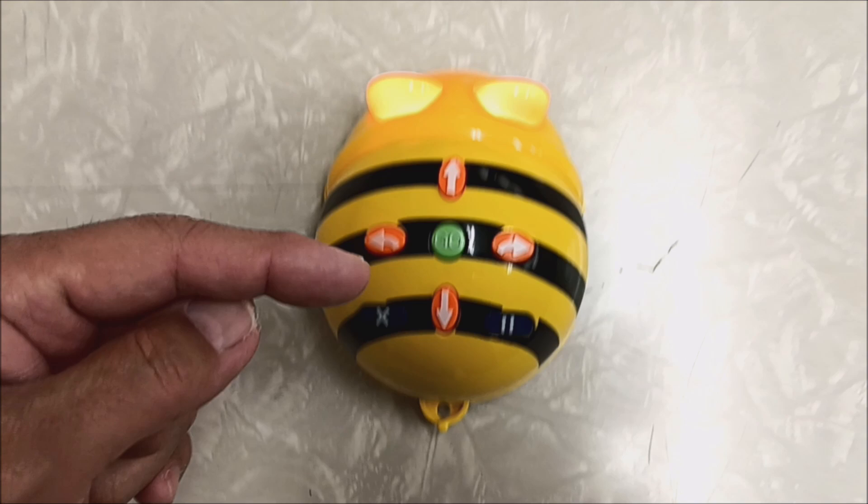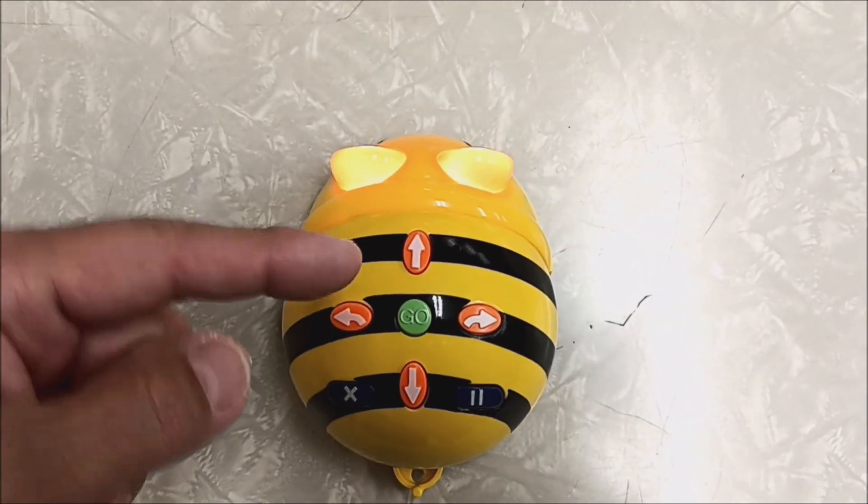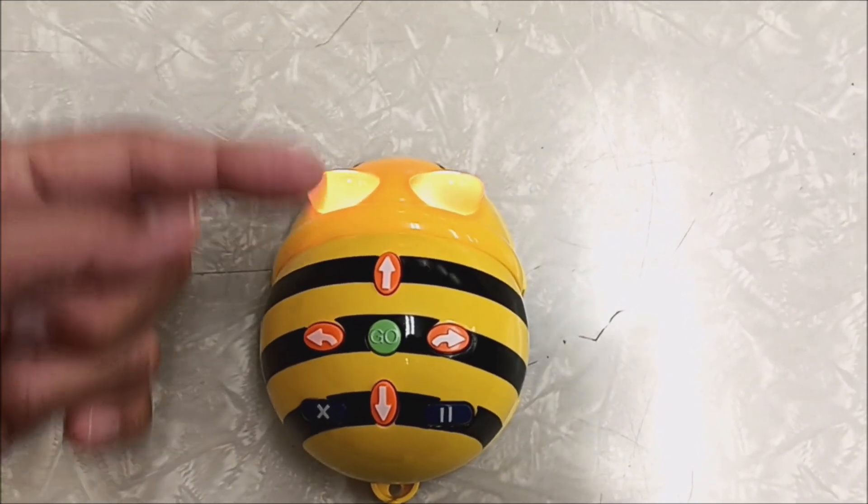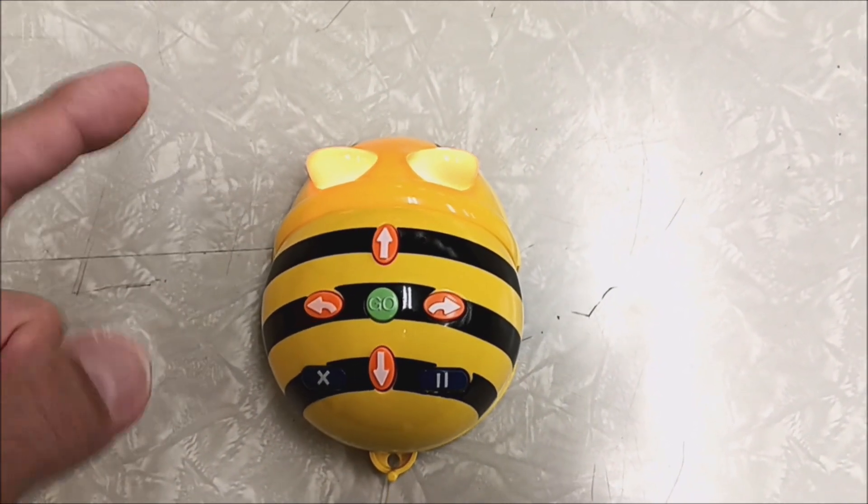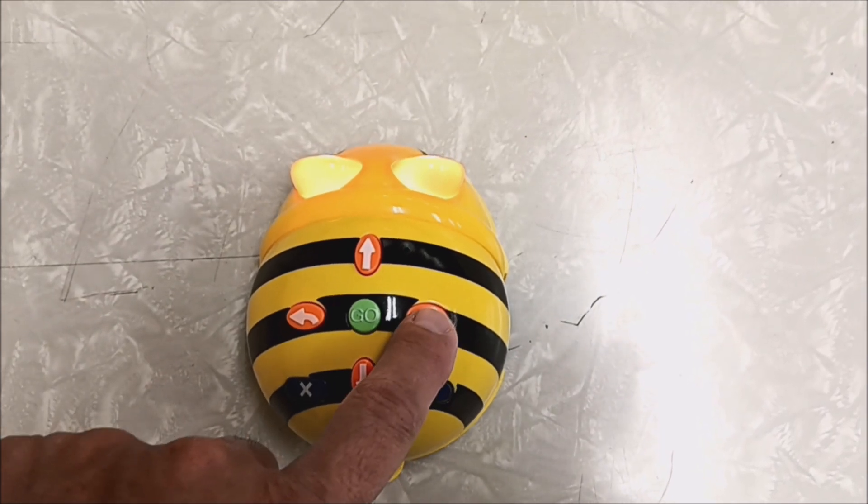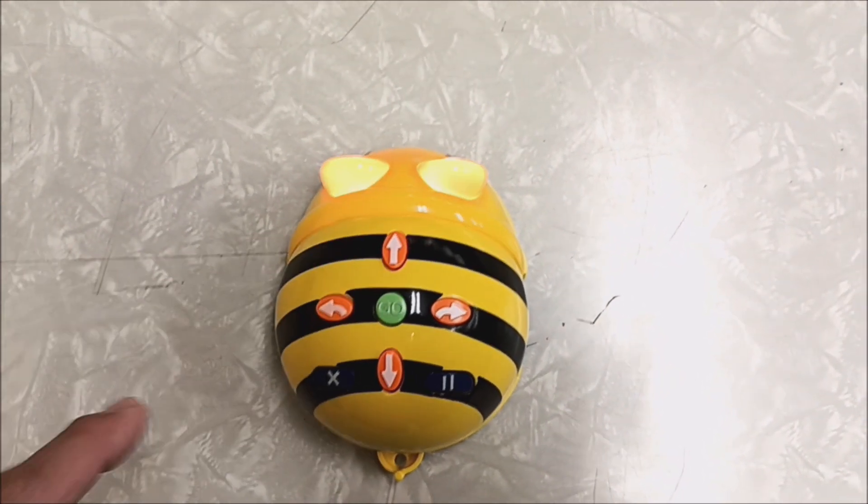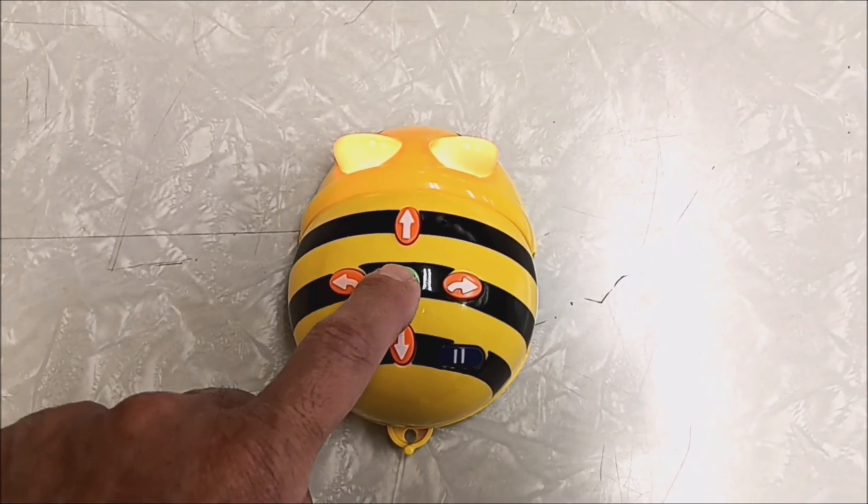So let's say I want this B-Bot to go forward twice. I'm just going to go one, two, and it gives you the sound to tell you that you're actually making it go twice. And then I want it to turn right, and then I want it to go forward another two times. And then when you're ready, you just hit go.